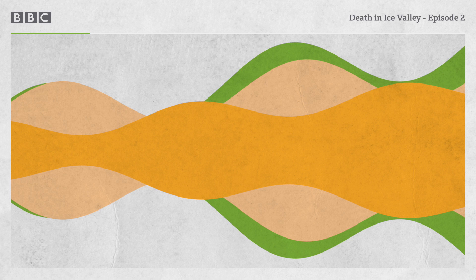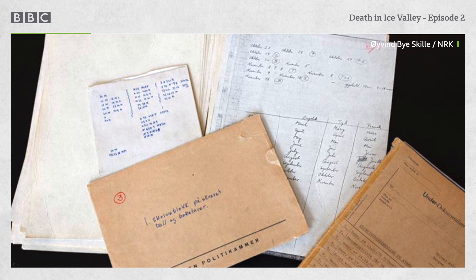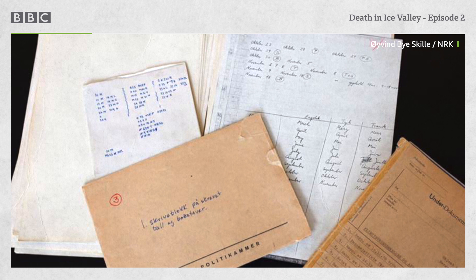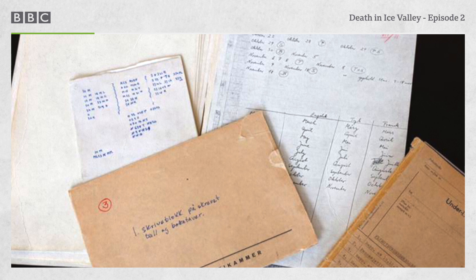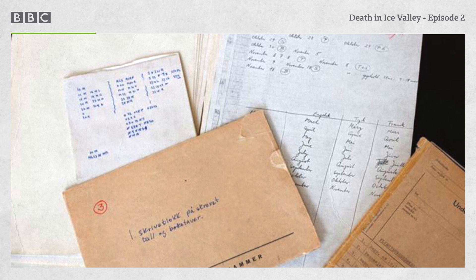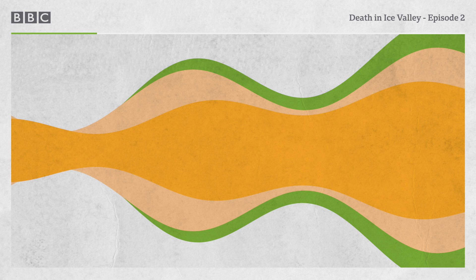What else did they find in the suitcases? The most significant thing for the police were a notebook with these codes. So they had her handwriting then, and they had some codes which they had to find out. A code book? I mean, not everyone travels around with a code book. Of course, they understood this is something significant. We need to know what does this mean. So they contacted a specialist in the military intelligence service in Norway to help them.